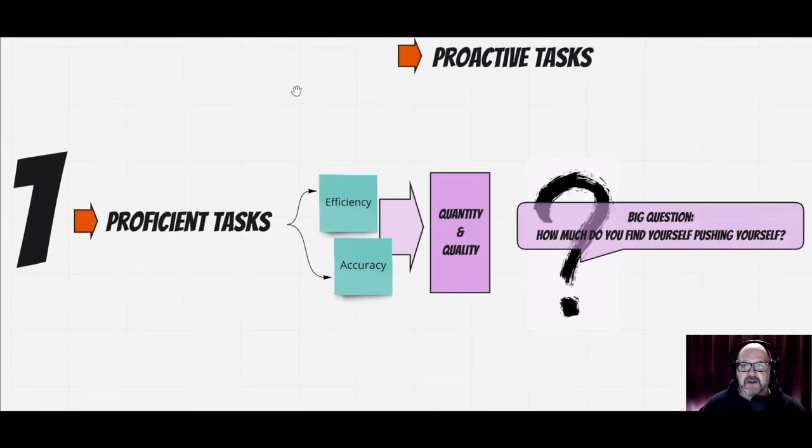The first one is proficient tasks, and that really has a lot to do with efficiency and accuracy. When we look at those together, they build towards not only quantity, but also quality. That's what we mean by efficiency and accuracy. It's not just how much we do or how much we build, but how efficient are we in doing that with the resources that we have and the people or the teams that we're working with.